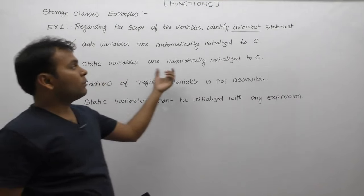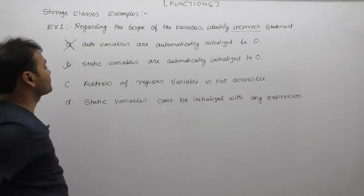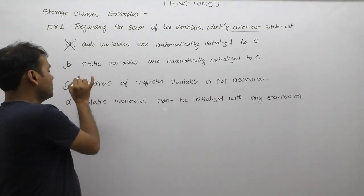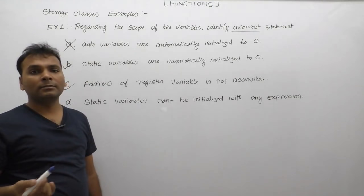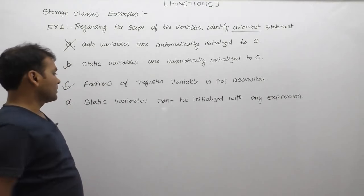Option b: static variables are automatically initialized to zero - this is true. Address of register variables is not accessible. As we know, registers don't have any address. That's why we cannot access the address of register variables. Option d: static...